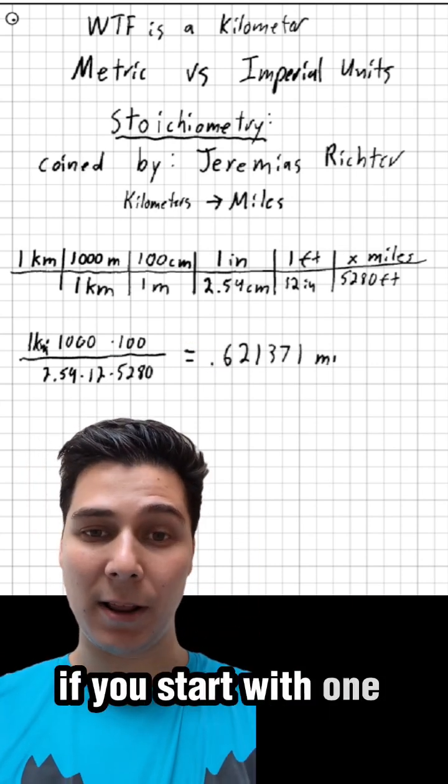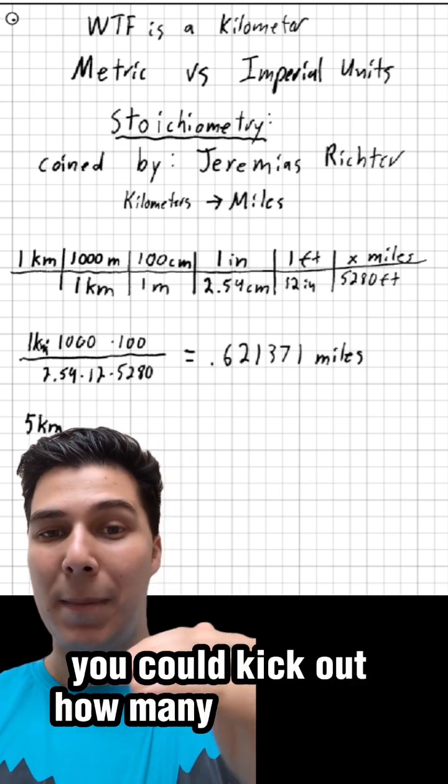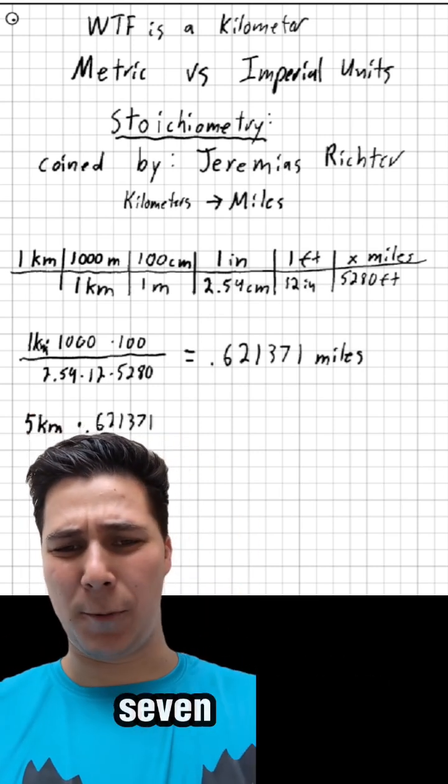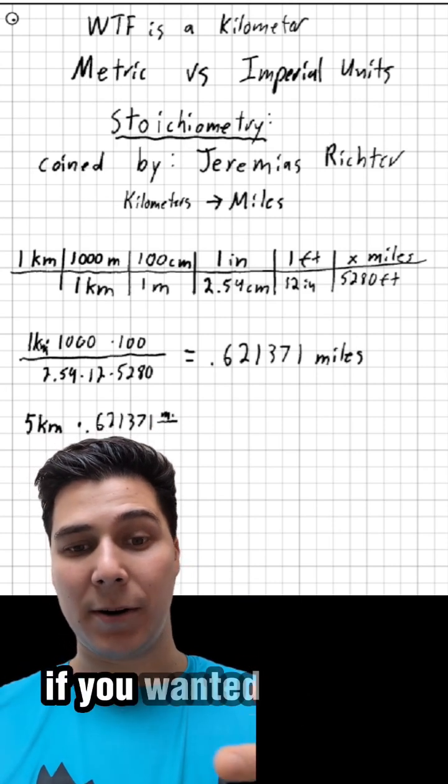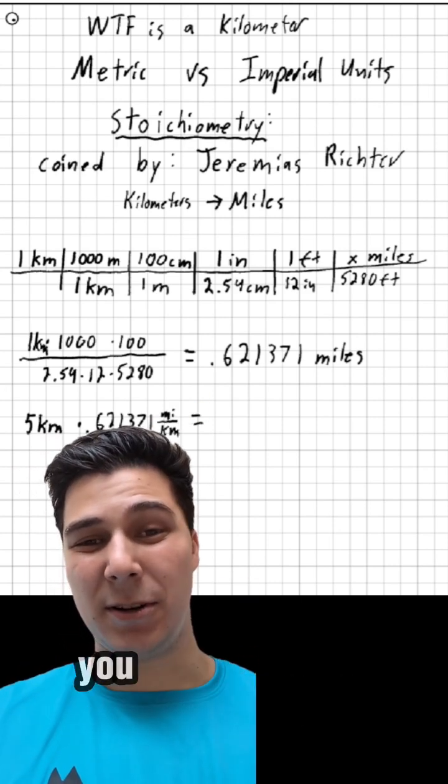But basically, if you start with one kilometer, you could figure out how many miles that is, and it ends up being 0.621371, and then additionally, if you wanted to run a 5K in how many miles it is, you could use the same kind of thing.